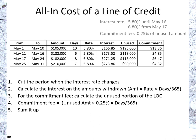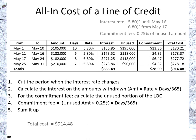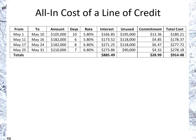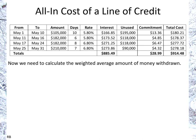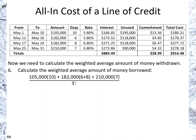Finally, we just sum it all up — the interest amounts plus the commitment fee — and we get the grand total for the month of $914.48. Now we have the cost for May. We also need to calculate the weighted average of the money withdrawn: $105,000 times 10 days, plus $182,000 times 14 days (6 plus 8), plus $210,000 times 7 days. That gives us a total of $163,483 for the month.